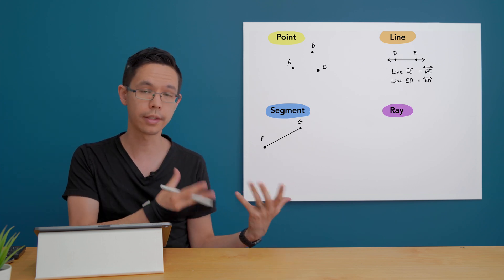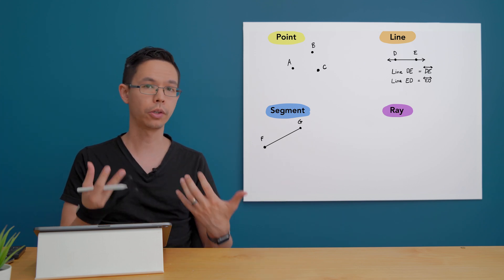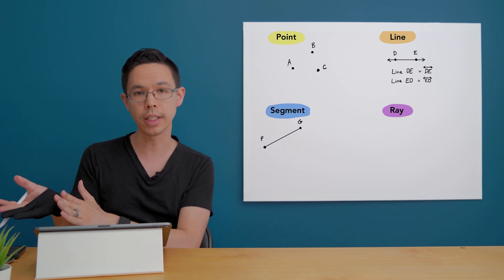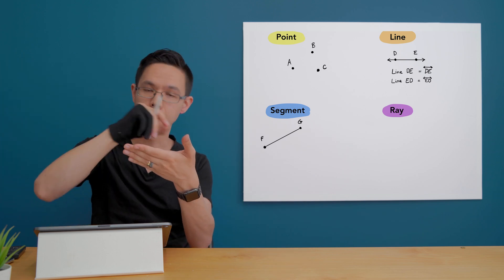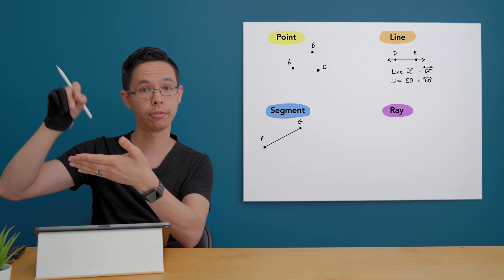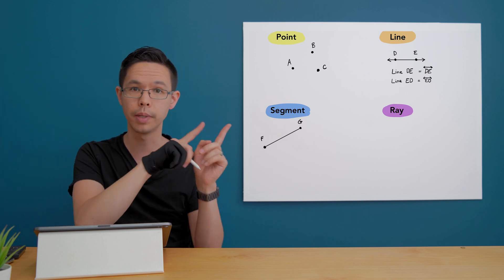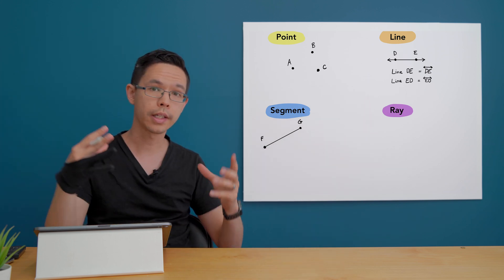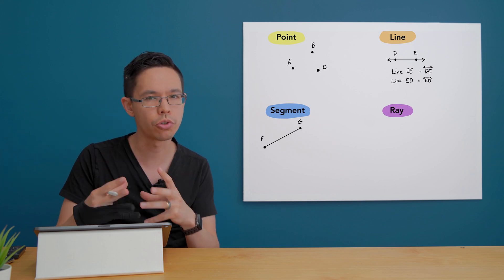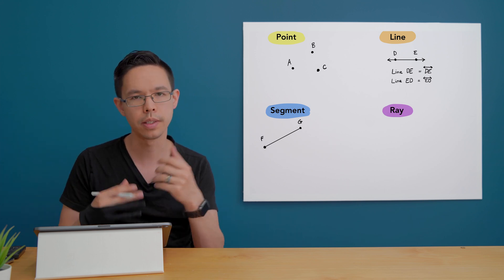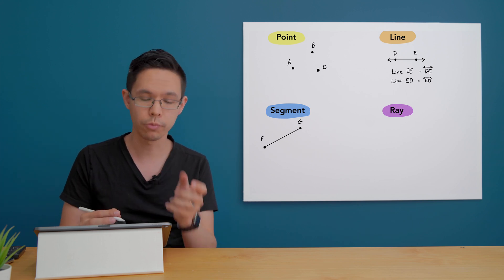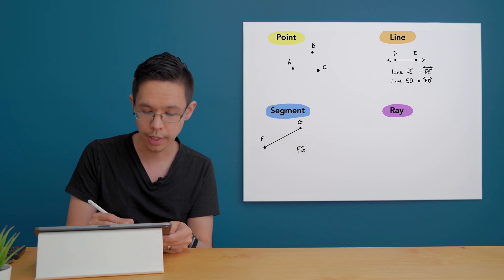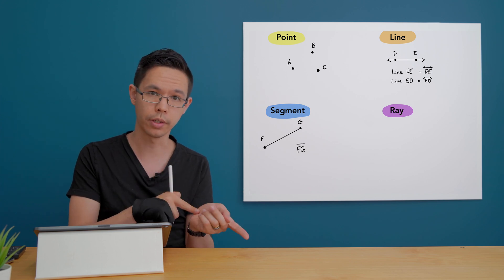So how would I call out this object? Well I could call this the line segment FG or I could shorten that. I can write the letters FG and if I want to use the icon for a segment it's actually just a straight line with no arrow heads on it.